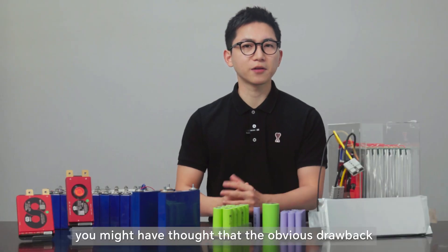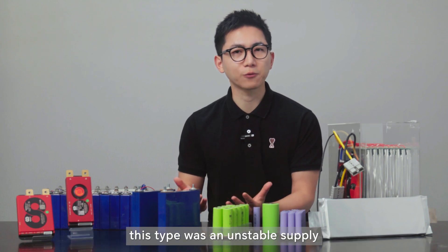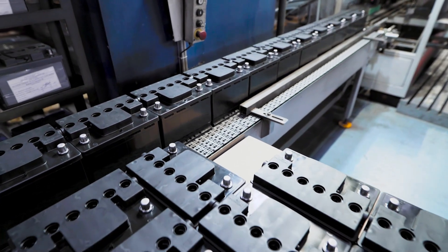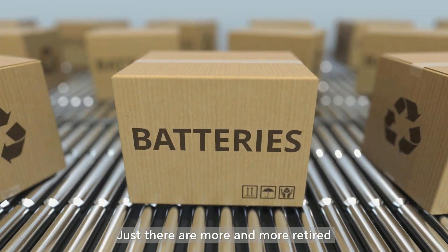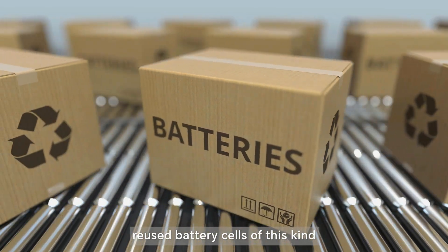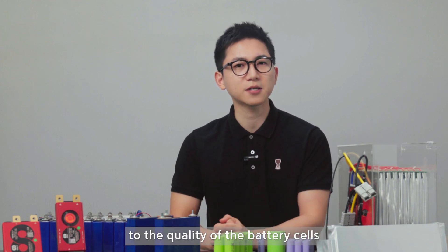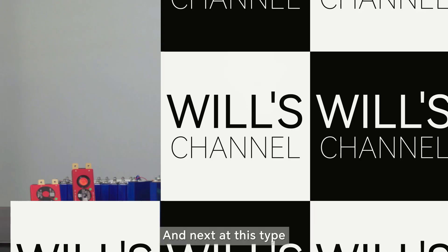Previously, you might have thought that the drawback from this type was unstable supply, but now it has improved a lot because of market demand. Just there are more and more retired and reused battery cells of this kind, so before assembling, you need to pay more attention to the quality of the battery cells and do good screening.